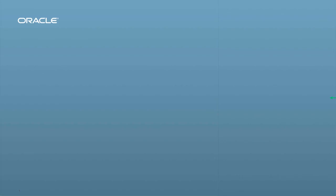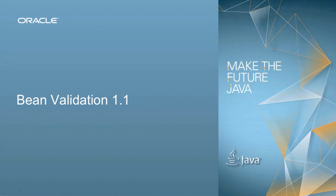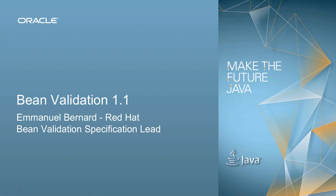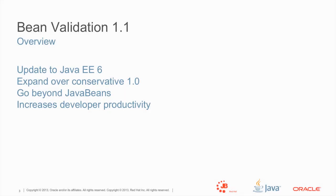Hello everyone. We're going to talk about Bean Validation 1.1, which is really part of Java EE 7 and the next evolution of Bean Validation 1.0. My name is Emmanuel Bernard. I work for Red Hat, and I've been part of the Hibernate team for quite a while. I've also heavily worked in the JCP, and in particular I'm the spec lead of Bean Validation.